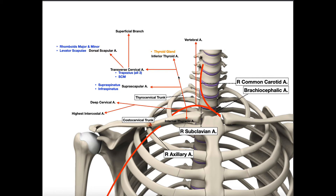Going further up the thyrocervical trunk, it gives off the transverse cervical artery. The transverse cervical artery supplies the trapezius muscle — all three parts, superior, middle, and inferior — and also the sternocleidomastoid. Interestingly, these two muscles are also supplied by the same nerve: cranial nerve 11, the spinal accessory nerve.